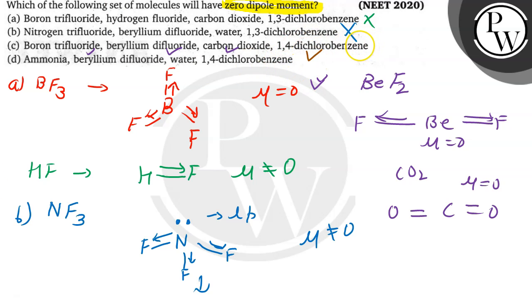So in option C, all the four molecules are having dipole moment zero, means this can be our answer. If we check last option, that is D, here we are given water. We know that water has a dipole moment not equal to zero.